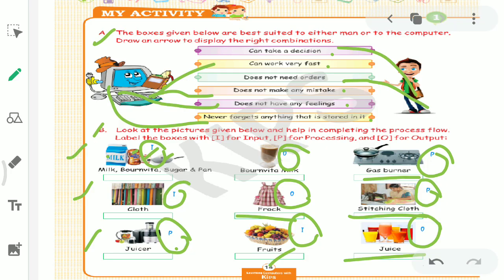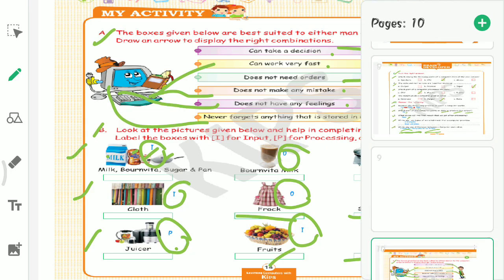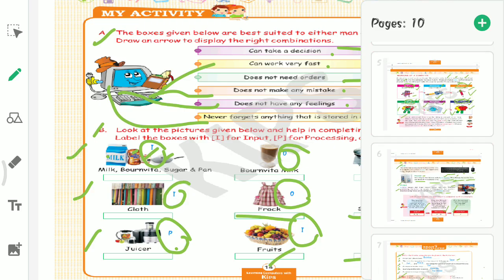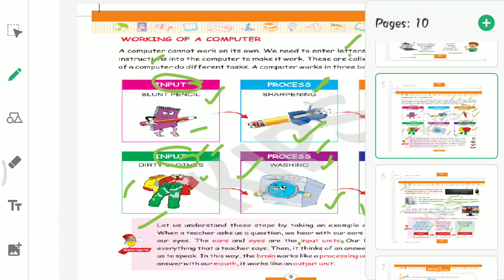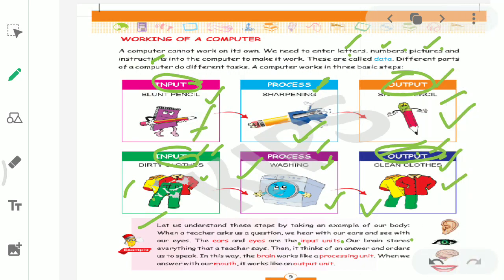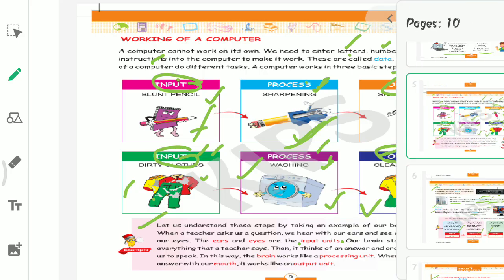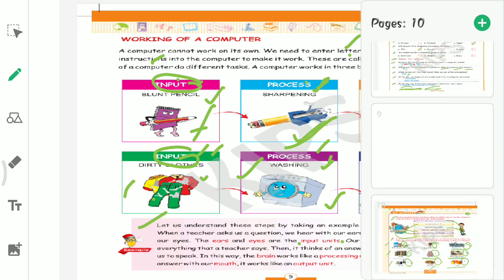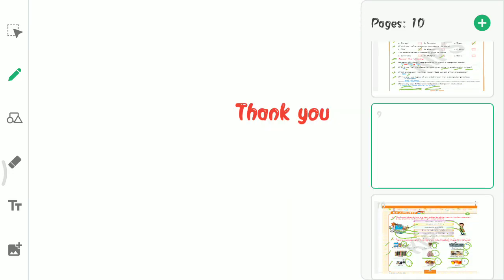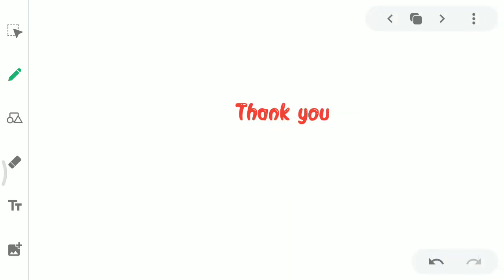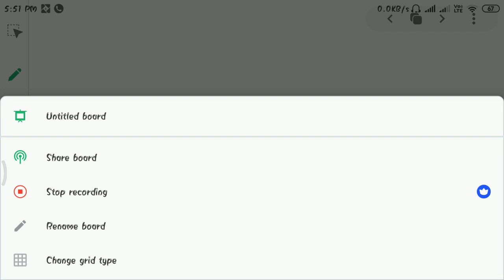You have to remember this, children. Computer works on three steps. Which ones? Input, process, output. I hope all the concepts and everything is clear to you. This was your computer teacher from Mount Litra Zee School. Thank you.